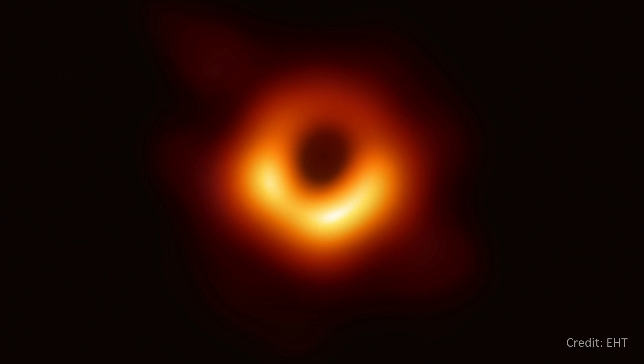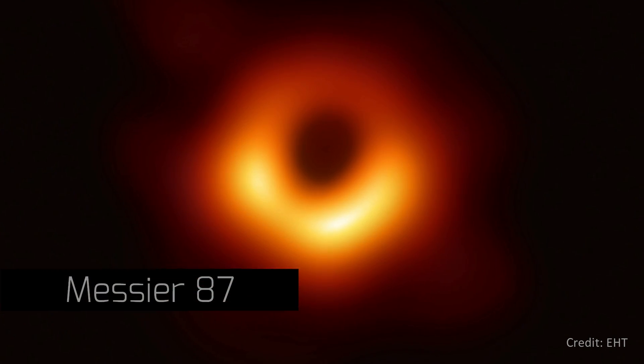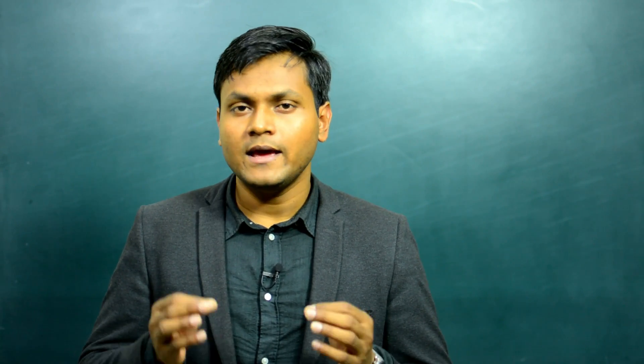Just a few days ago, the first ever image of a black hole was released. It's an image of a supermassive black hole at the center of a galaxy by the name of Messier 87, or M87, which is around 55 million light years away. But before we talk about how this image was obtained and how to interpret it, let's first talk about black holes.